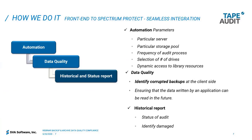We provide the flexibility to set up the audit jobs based on particular servers. IT teams can select a particular server, a storage pool — if they know where the critical application is — and select down to the storage pool level. They can select the frequency of the audit process and also select a specific number of tape resources such as tape drives. Our solution has a dynamic feature where tape resources are not limited to the audit jobs but can be released automatically and brought back in when those resources are no longer needed.